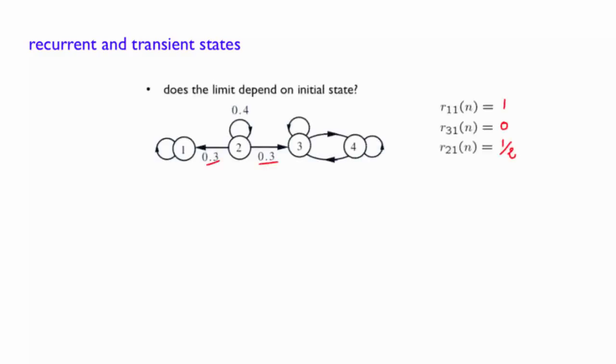In the last example of the previous clip, we observed that the initial state of where the Markov chain starts can matter, and that in some cases the inference of the initial state never vanishes in the long run.